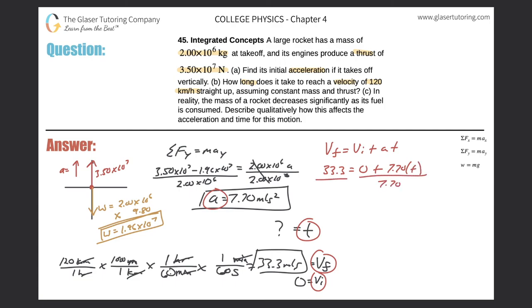So time will be 33.3 divided by 7.7. We get a value of 4.33 seconds. That is the time that it takes to reach the final velocity.